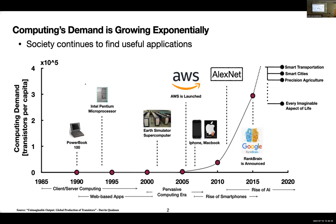The demand for computing has been growing exponentially for quite some time and is expected to accelerate even further, because society continues to find useful applications for computing. In this graph, I have time on the x-axis and transistors shipped per capita as a proxy for computing demand on the y-axis. I've also augmented the graph with key inventions and applications to show that early computing inventions were few and far between, but there has been a slew of new applications and inventions during the last two decades.